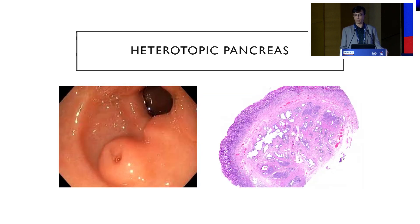This is heterotopic pancreas or ectopic pancreas, with central umbilication and a smooth small nodule. If you take a biopsy from heterotopic pancreas, you will find gastric mucosa plus acini, as seen here, and also ductal structures.